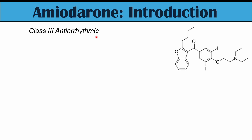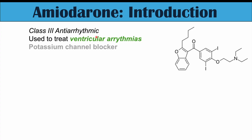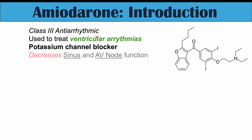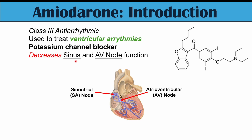Amiodarone is a class 3 antiarrhythmic medication. It's used primarily to treat ventricular arrhythmias, and it acts in the heart as a potassium channel blocker — it affects potassium signaling within the heart. The sinoatrial node (SA node) is going to be affected, and also the atrioventricular node will be affected as well.